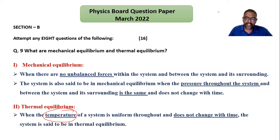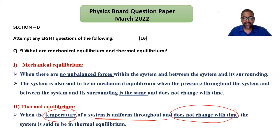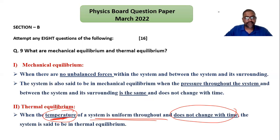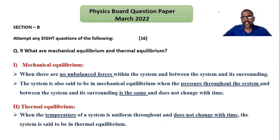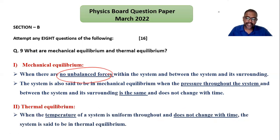Now, what is thermal equilibrium? Thermal equilibrium means when the temperature of the system does not change with time and temperature is uniform throughout the system, then the system is said to be in thermal equilibrium. Key point: temperature is uniform throughout and not changing with time.